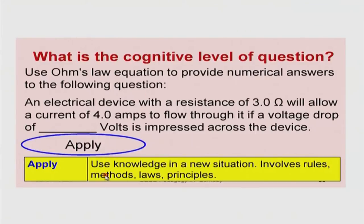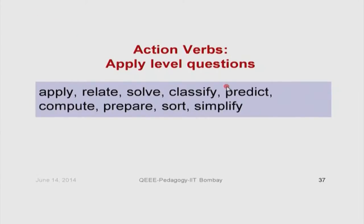The description says 'use knowledge in a new situation' — knowledge about Ohm's law was used in a new situation where certain parameters were given. It may involve rules, methods, laws, and principles that are generic descriptions of behavior applied in a new context. Action verbs for apply level questions include examples like calculate and solve. When a student does a task at apply level, they have already achieved mastery at the remember and understand levels — lower cognitive levels are subsumed into higher ones.